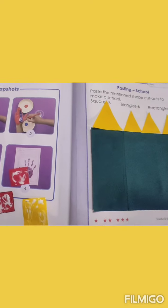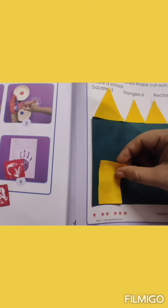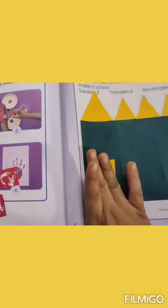Now here we need to paste one more rectangle. So I have applied glue. And we will paste it like this. The yellow color rectangle. Okay. Gently press it so that it gets stuck.